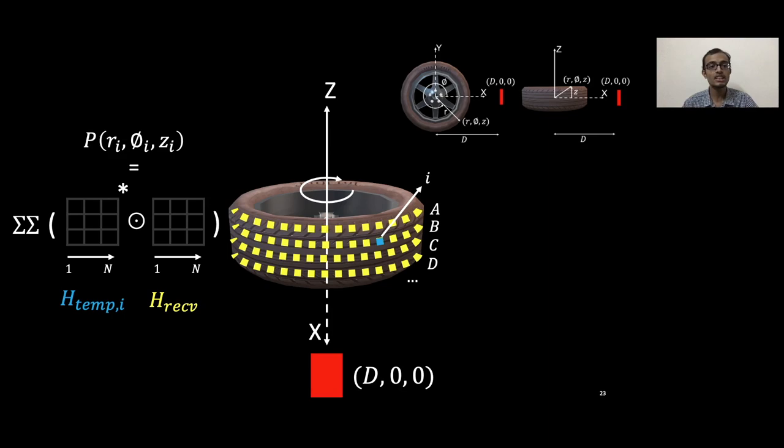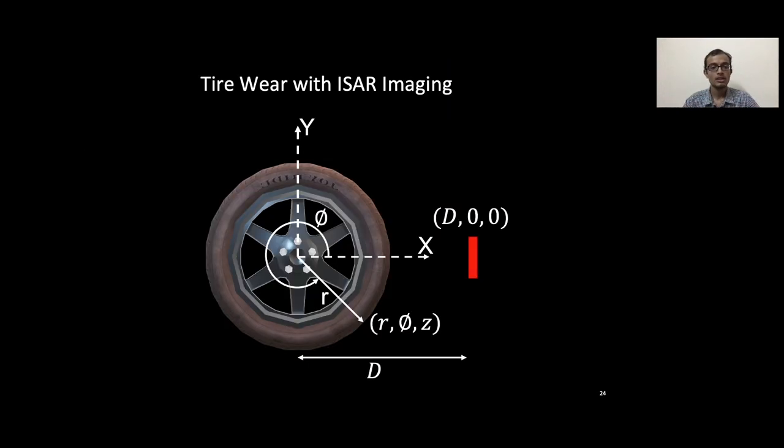More concretely, taking the dot products of h temp i and h receive, and summing it across rows and columns. Now this process is for i. You can iterate over different possible i values and generate a full scale ISAR image. But to move from the ISAR image to tire wear, there is another step involved.